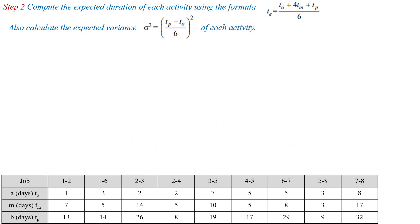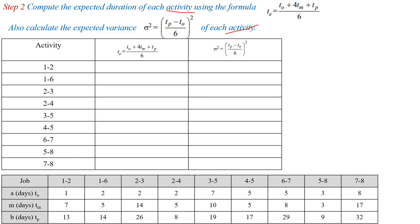The second step is to compute the expected duration of each activity using the formula: TE = (T0 + 4TM + TP) / 6. Also calculate the expected variance, sigma squared = ((TP - T0) / 6) squared, for each activity. We need to determine TE and sigma squared for all activities in a table.